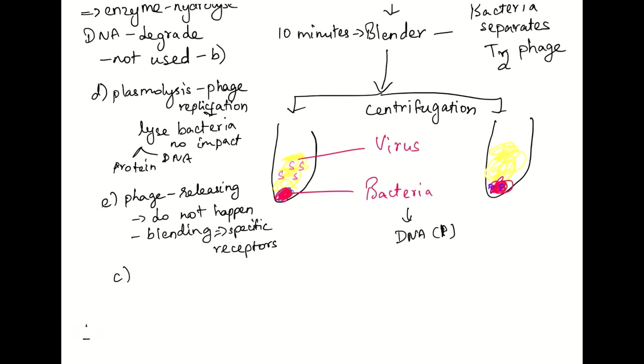Phosphorus was found in the nucleic acid and sulfur was found in the proteins. And that is the finding that told us DNA is the genetic material.